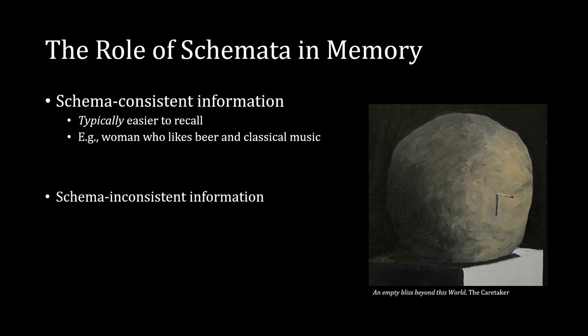Schema-inconsistent information is typically harder to recall for the opposite reason — it received less attention and is harder to locate in memory. However, there's an exception: information that is highly inconsistent with your schema is actually very easy to remember. This is because memory is guided by schema, so the consistent information gets more attention and is easier to file and retrieve, while highly inconsistent information stands out so strongly it becomes memorable.